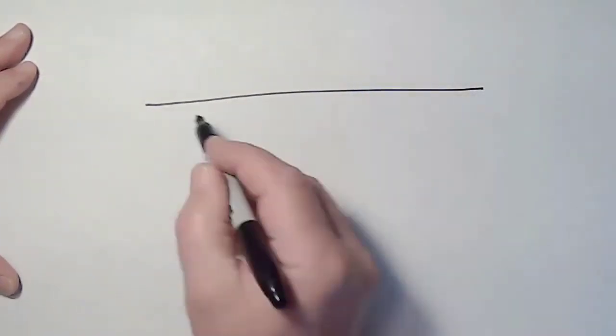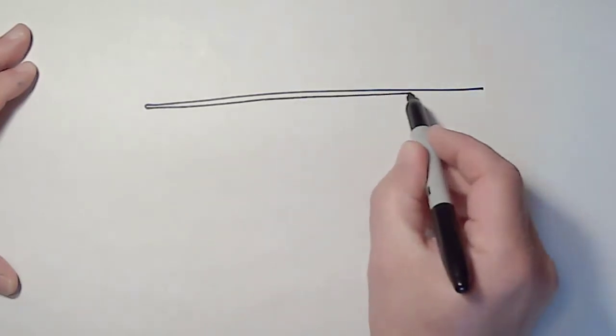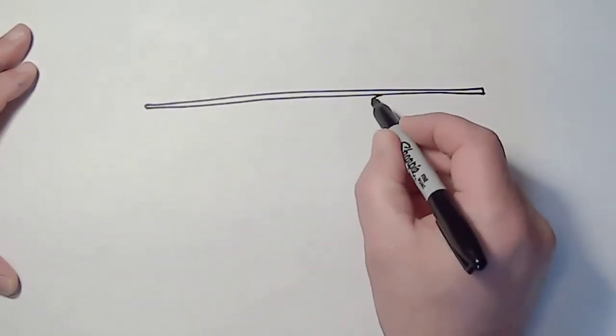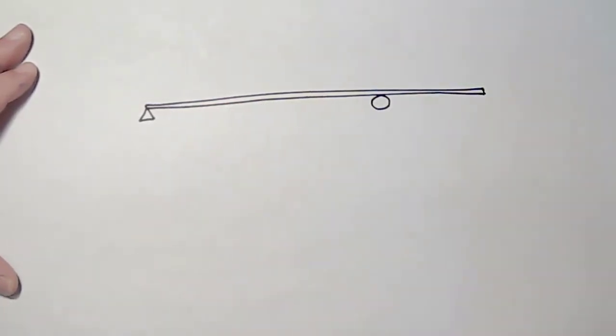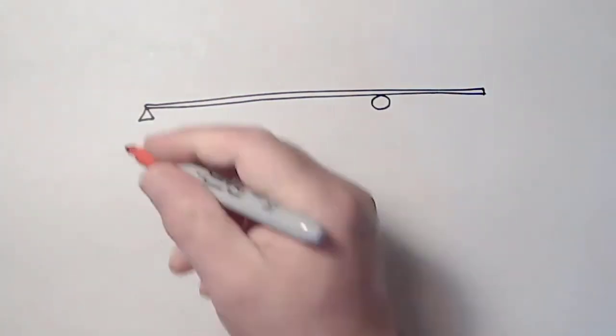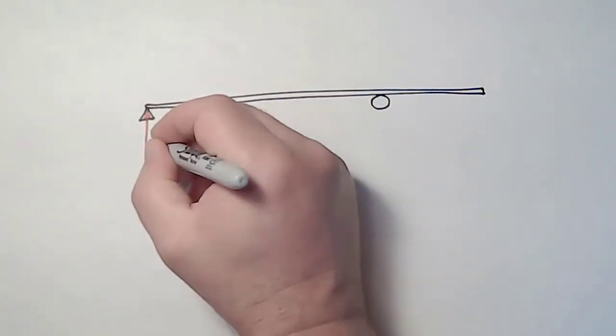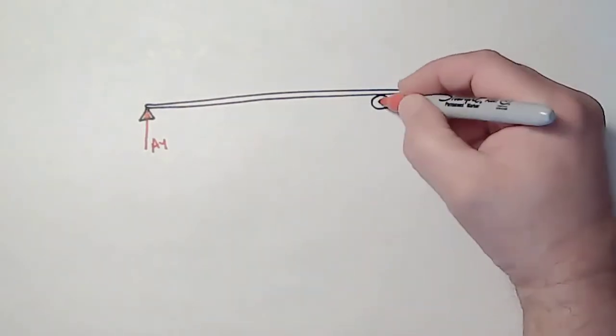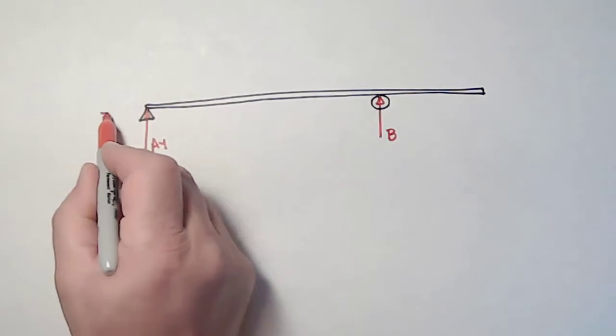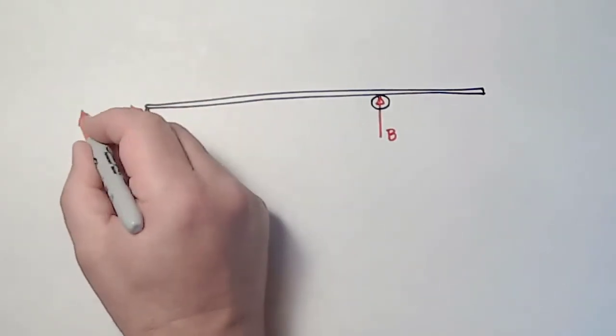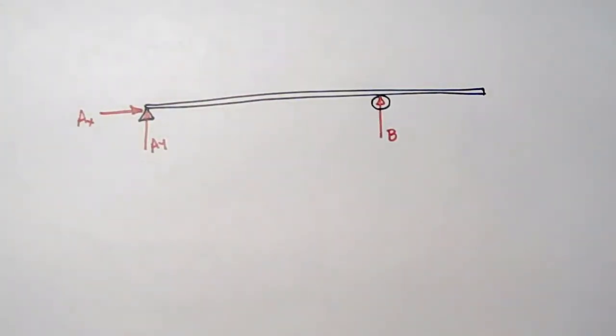Let's begin. So here's my beam and there's a support at point B and a pin at point A. If I draw a free body diagram of this beam, I have an unknown force at point A. I'll call that AY. I have an unknown force at B. I also have an unknown force AX because there's a pin so there's always two forces.